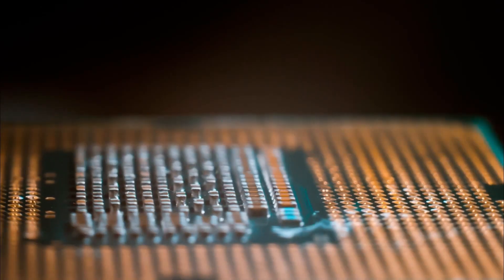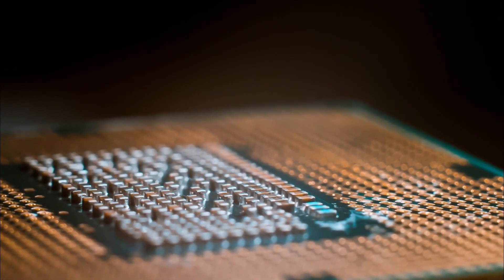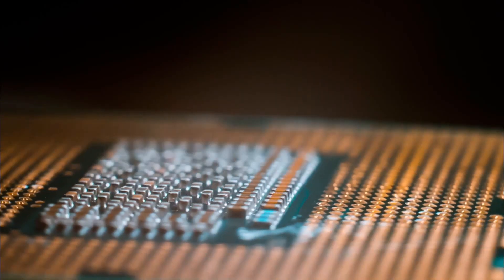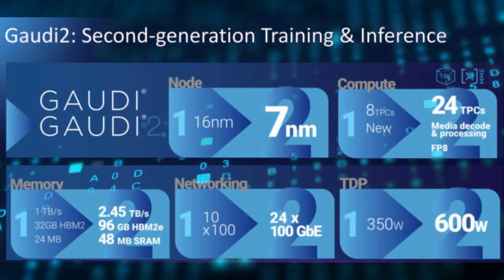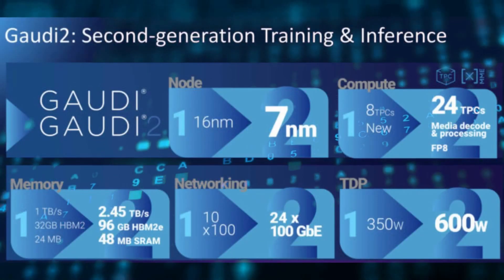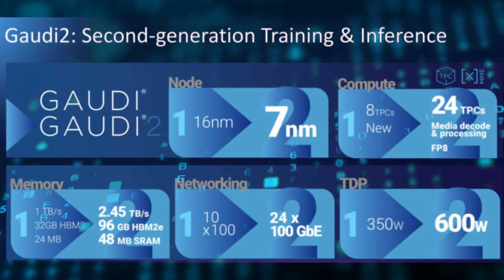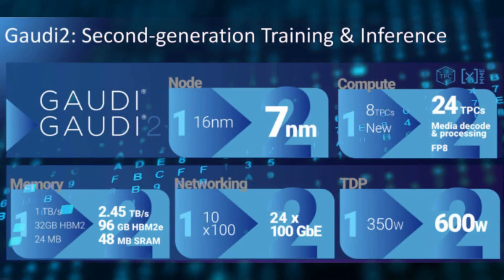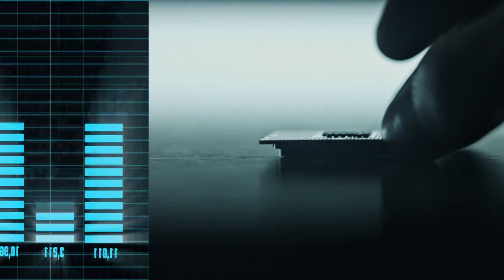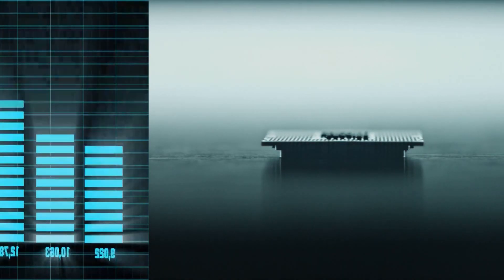Both Gaudi 2 and Greco made the leap from 16nm to 7nm via TSMC. In Gaudi 2's case, the 10 tensor processor cores present in the first-gen Gaudi Training Processor have increased to 24, while the in-package memory capacity has tripled from 32GB to 96GB, and the onboard SRAM has doubled from 24MB to 48MB. This is the first and only accelerator that integrates such an amount of memory.